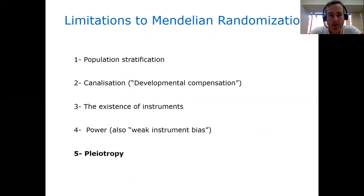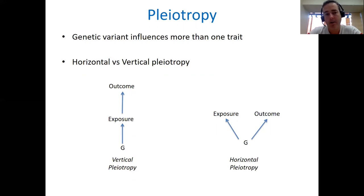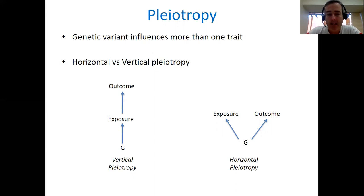Let's talk about pleiotropy last of all. By pleiotropy, I mean that a genetic variant influences more than one trait. I'd like to distinguish between two sorts: horizontal pleiotropy and vertical pleiotropy. Vertical pleiotropy is where you have a cascade structure — a genetic variant affects an exposure, which in turn affects an outcome. This is not problematic for Mendelian randomization; in fact, MR is based on vertical pleiotropy because we're using a genetic variant to proxy an exposure which in turn influences an outcome.